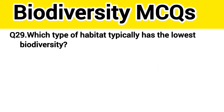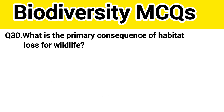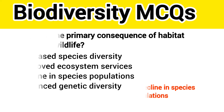Question number 30. Which type of habitat typically has the lowest biodiversity? Question number 31. What is the primary consequence of habitat loss for wildlife? The right answer, option C: Decline in species populations.